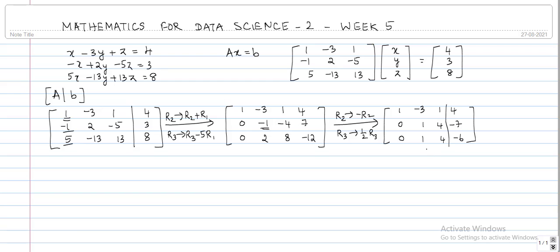The next operation that we do is to make this entry 0. For that, r3 is replaced with r3 minus r2. So that gives 1, minus 3, 1, and then 4. The first row remains as it is. Second row also remains as it is. The last row is last row minus second row, so 0 minus 0, 1 minus 1, 4 minus 4 minus 6 plus 7, that is 1.